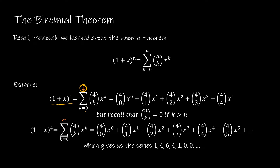For this particular example, we start with k = 0, so that's (4 choose 0) x^0. Then we go on to k = 1: (4 choose 1) x^1, (4 choose 2) x^2, (4 choose 3) x^3, and (4 choose 4) x^4. That's probably something you are very comfortable with because we've done it a lot.